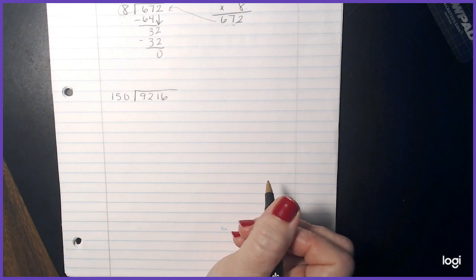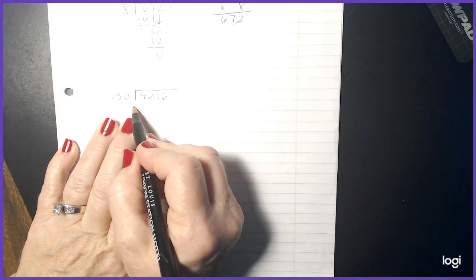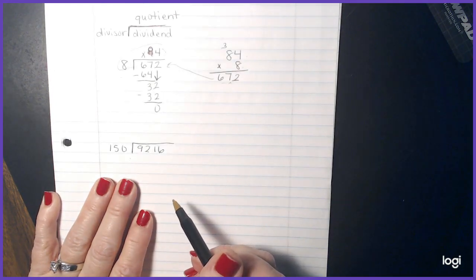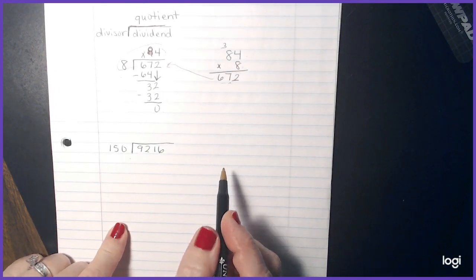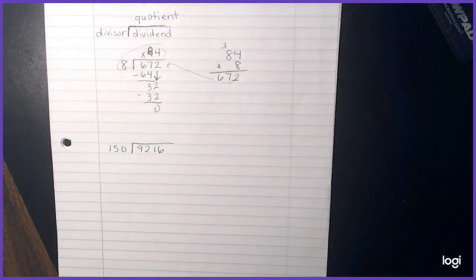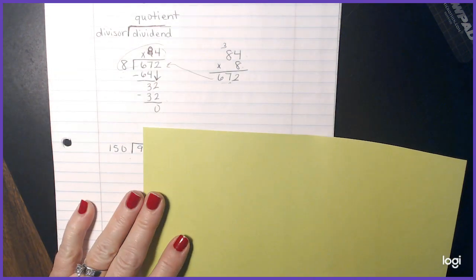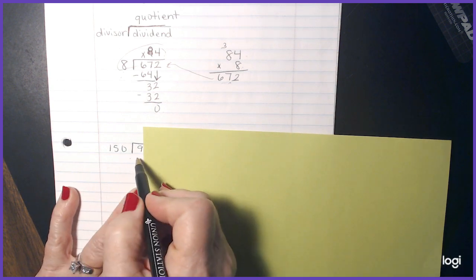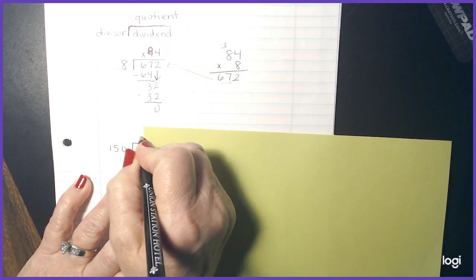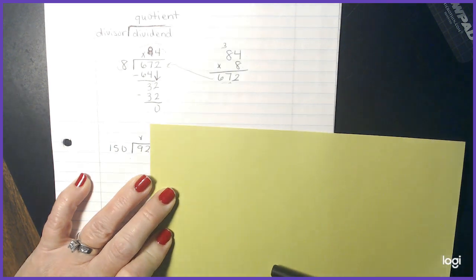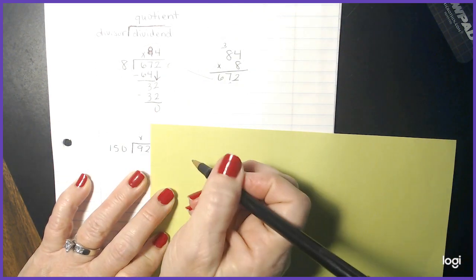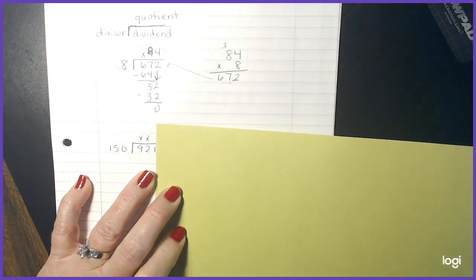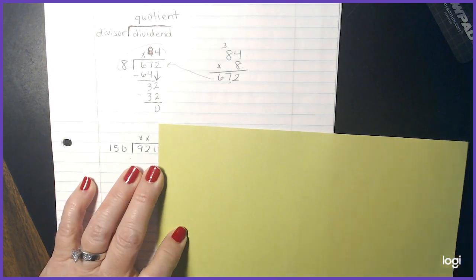So once again, we have to find our quotient. 150 is a pretty large number. I know that 150 cannot go into 9, because obviously nine is smaller. I also know that 150 cannot go into 92 because 92 is smaller. So now I'm going to look over here at 150.